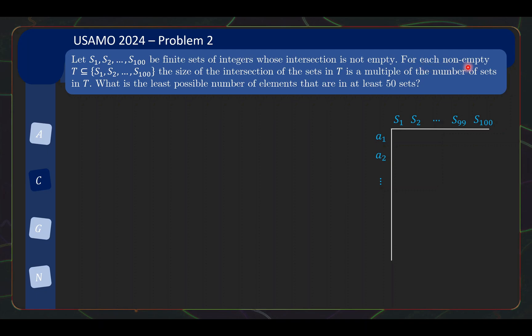Next, each time you take some non-empty collection, let's say you take a collection of 98 sets, S1 to S98, then when you take the intersection, meaning you look at the number of common elements that are in S1 to S98, that number of common elements is a multiple of 98 itself, because 98 is the size of your collection. Similarly, as another example, if you look at S51 to S100, that is a collection of 50 sets, the number of common elements is a multiple of 50. Okay, the goal is to find the least possible number of elements that are in at least 50 sets.